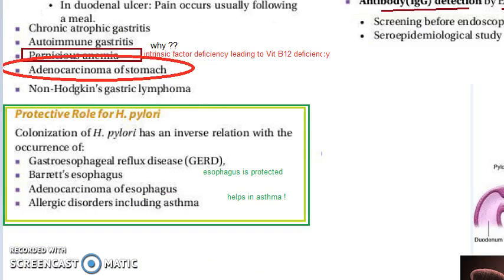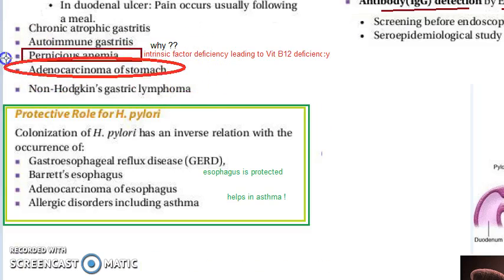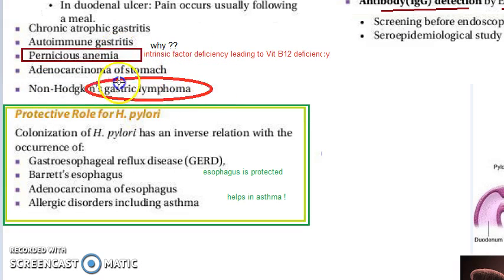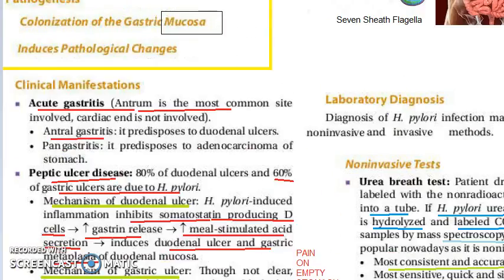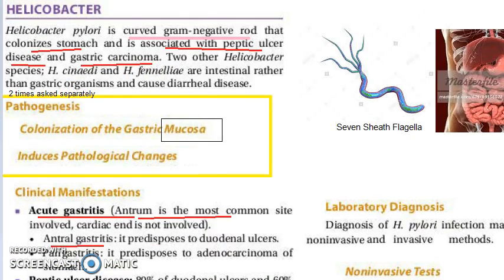Some other clinical manifestations include adenocarcinoma of the stomach, Hodgkin's gastric lymphoma, non-Hodgkin's gastric lymphoma, and as mentioned at the beginning, it can cause gastric carcinoma.